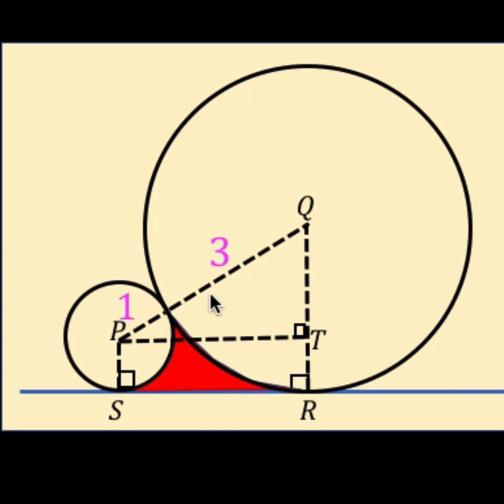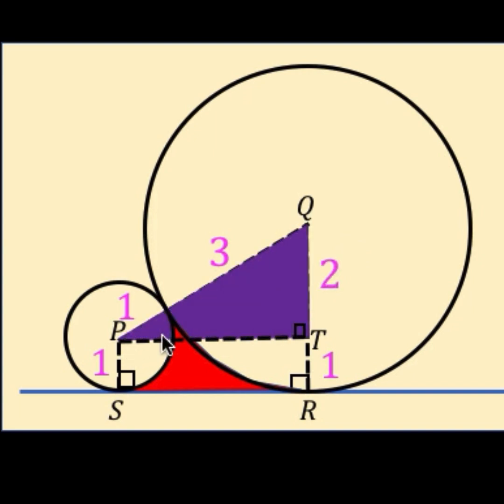We know that the radius of the small circle is 1 unit so segment TR is also 1 unit, and since radius QR is 3 units it follows that the length of segment QT must be 2 units. So we have a right triangle where the hypotenuse is 3 plus 1 or 4 units and one of the legs is 2 units.